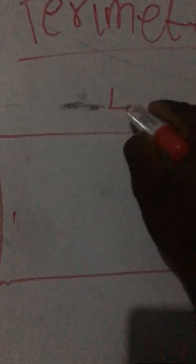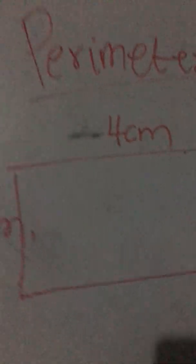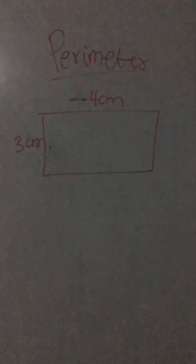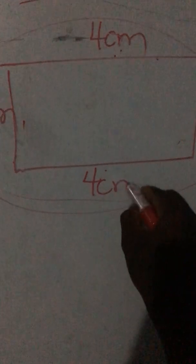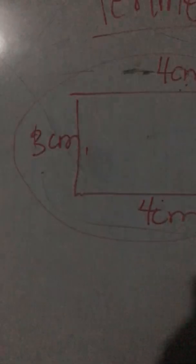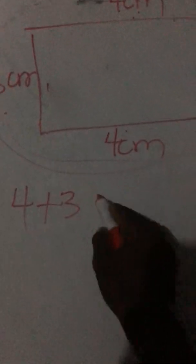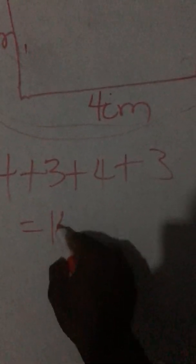Today we shall look at perimeter. Perimeter simply means you are adding the surface area of an object. So if you have a rectangle with four centimeters on one side and three centimeters on the other, you find the perimeter by adding everything around it. With rectangles, opposite sides are equal — so if here is four, the opposite is four; if here is three, the opposite is three. So four plus three plus four plus three gives you 14 centimeters.